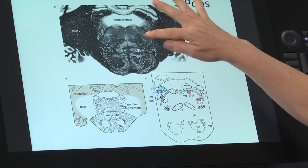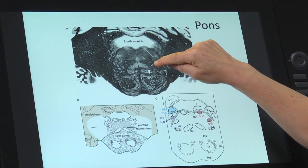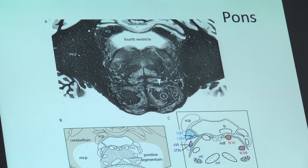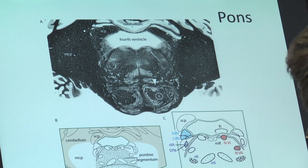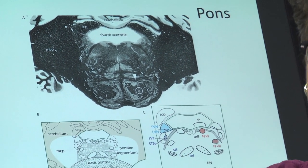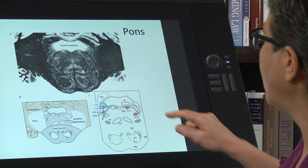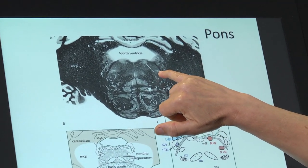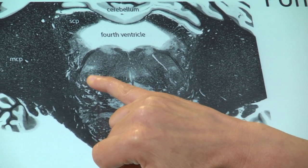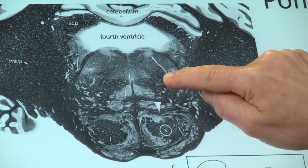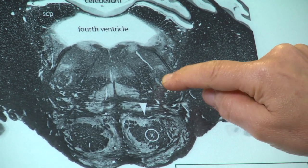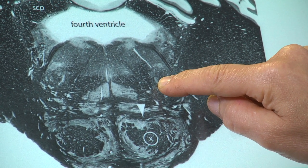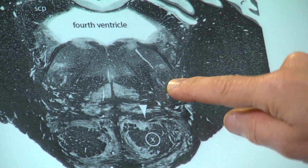So: medial lemniscus, spinothalamic tract, corticospinal tract — we're done with those. Now, what cranial nerve nuclei are present here? Two really important ones. One is the facial nucleus, which is quite hard to find. It's down here in the ventral part of the pontine tegmentum.